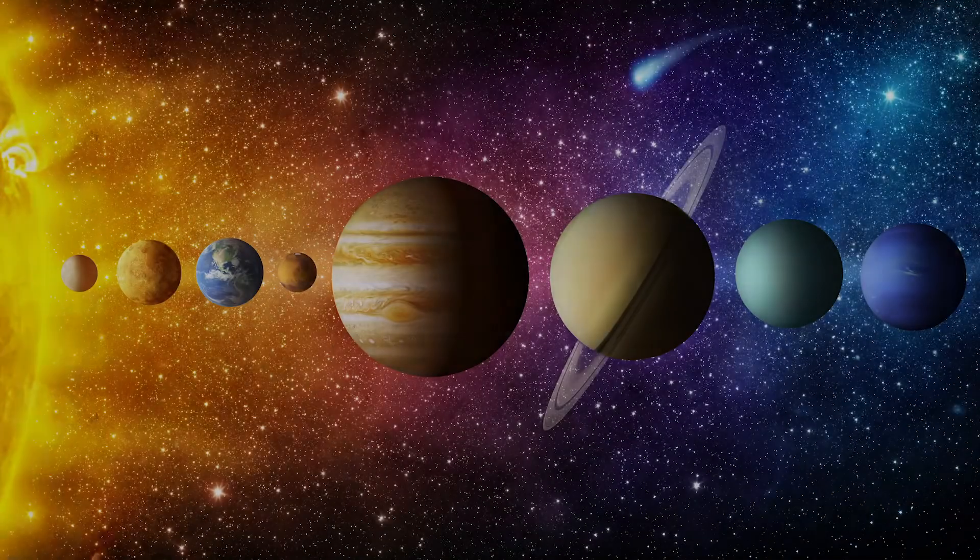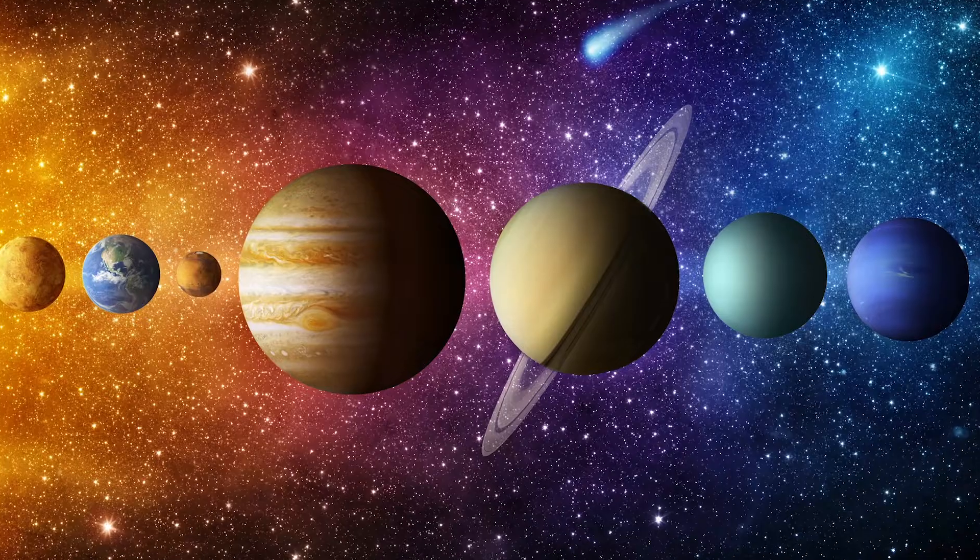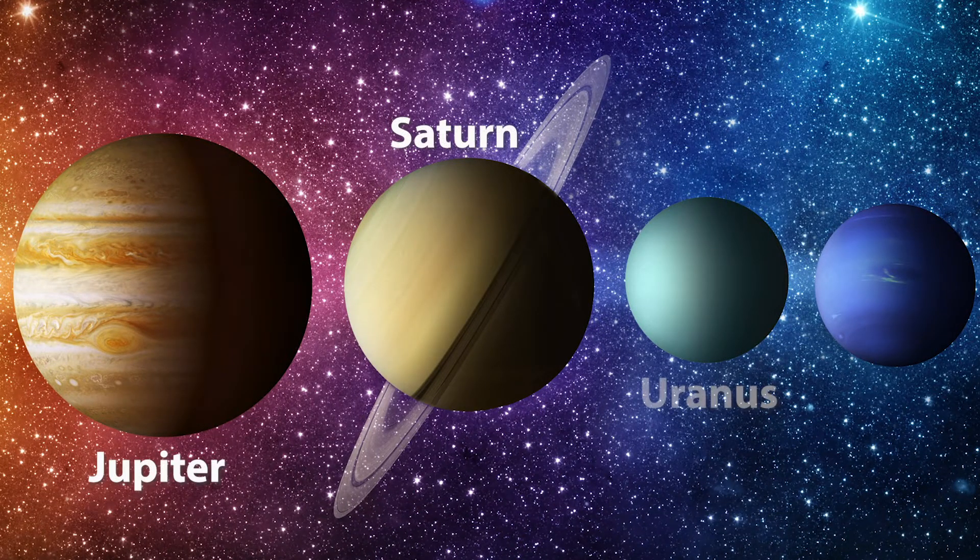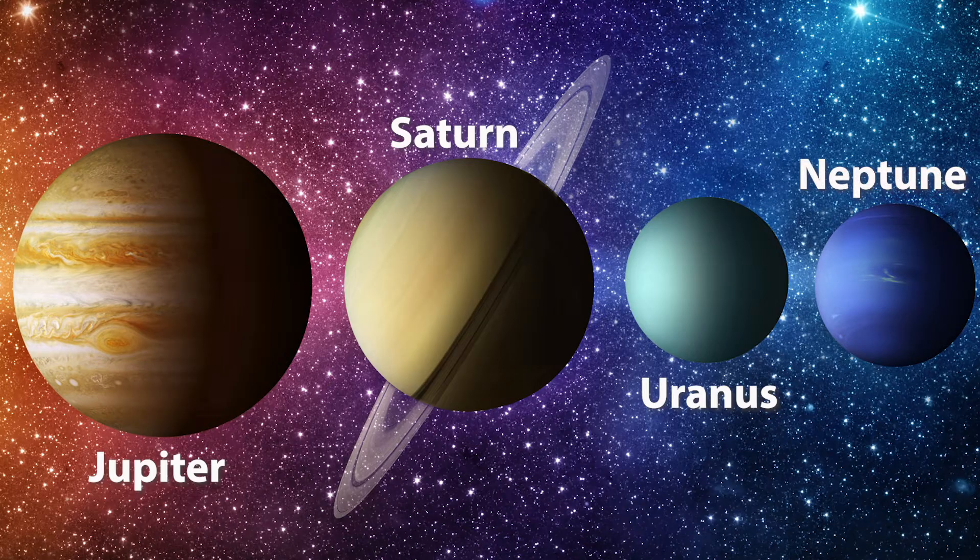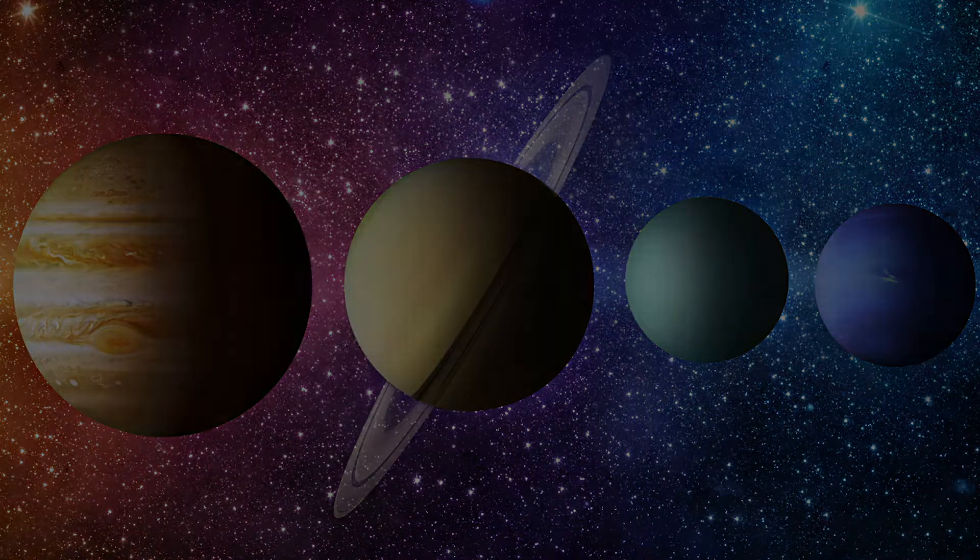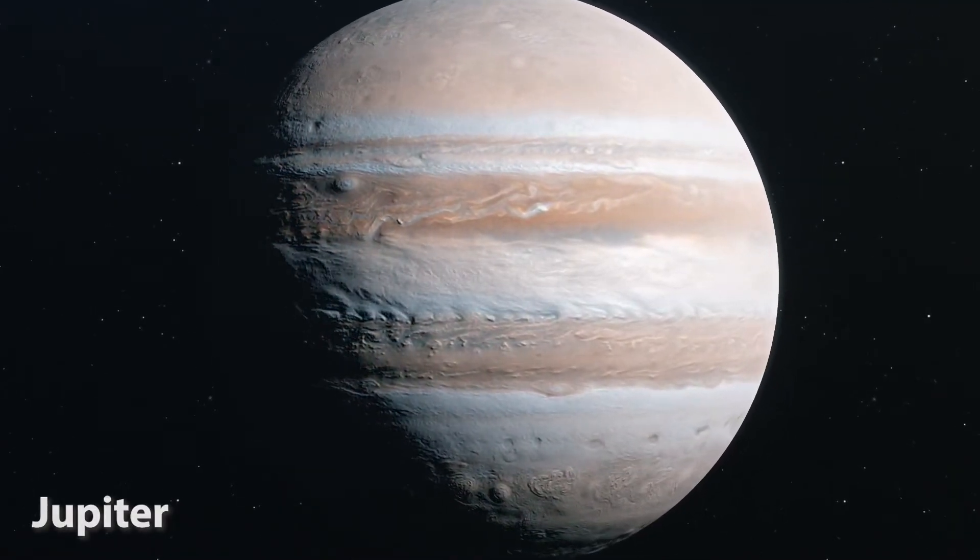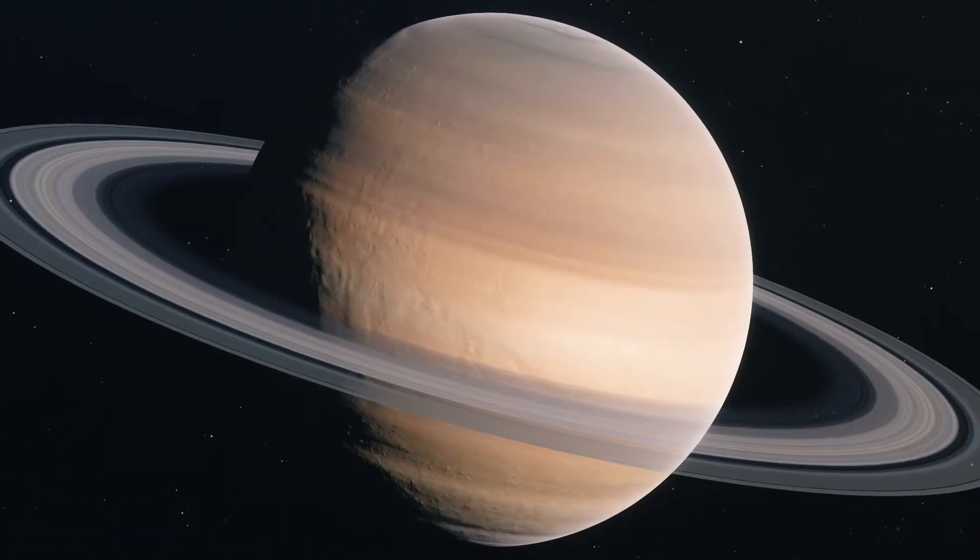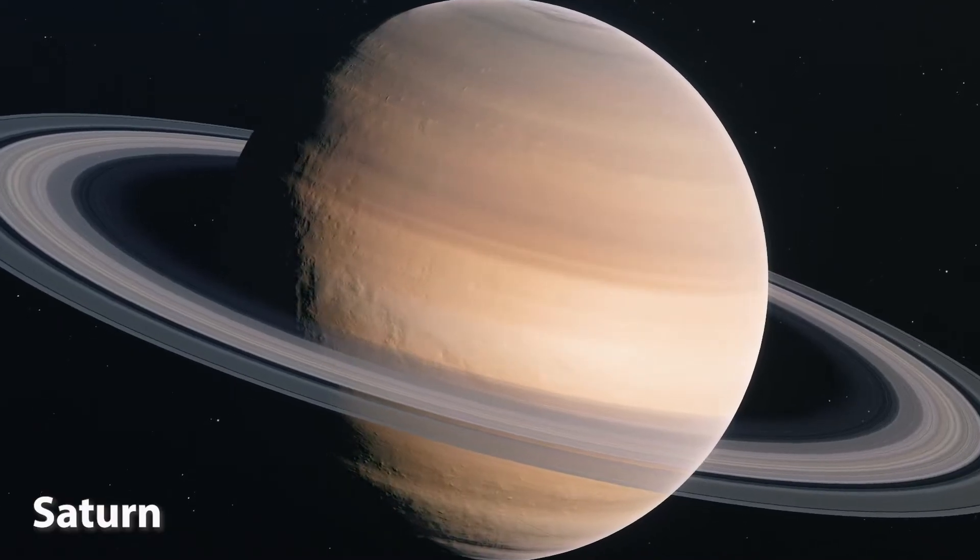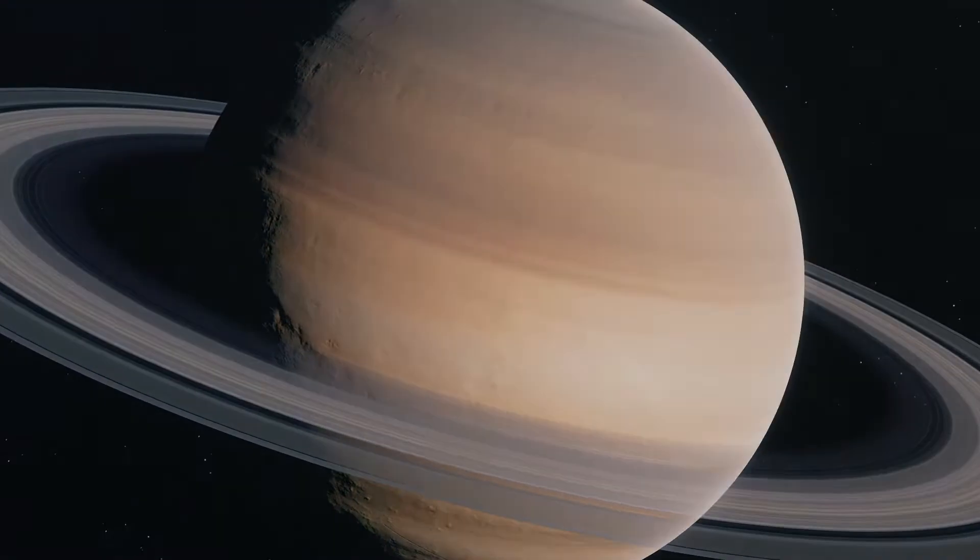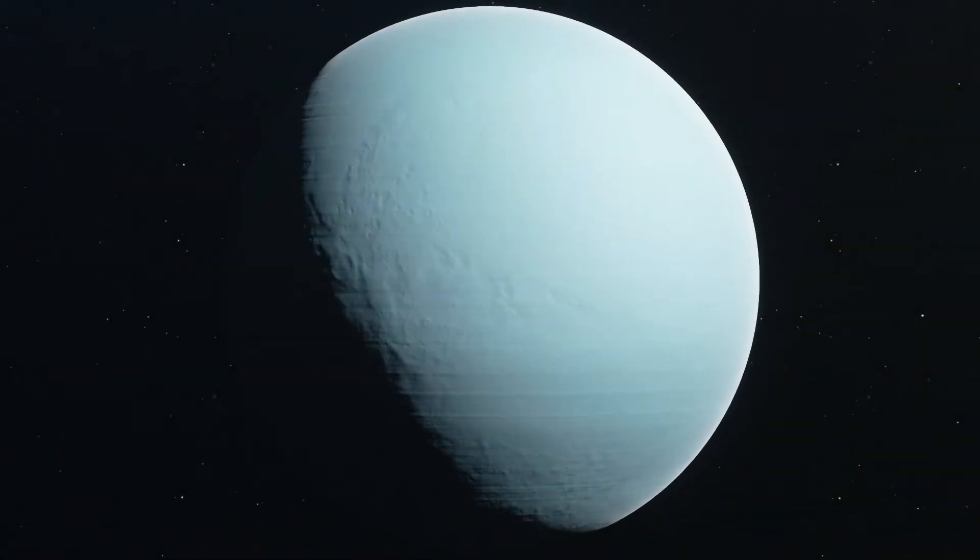The planets furthest from the Sun are the outer planets: Jupiter, Saturn, Uranus, and Neptune. The biggest two outer planets, Jupiter and Saturn, are gas giants. They are composed mostly of the gases hydrogen and helium.